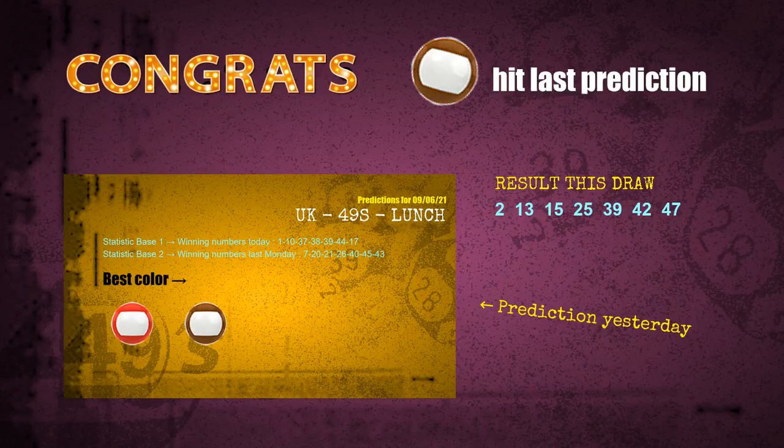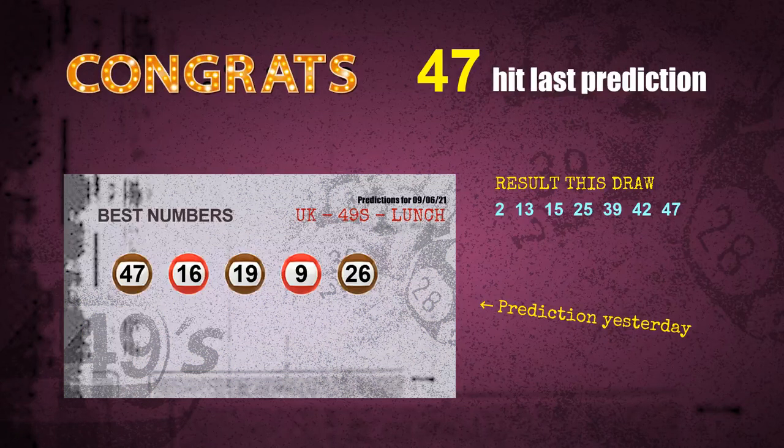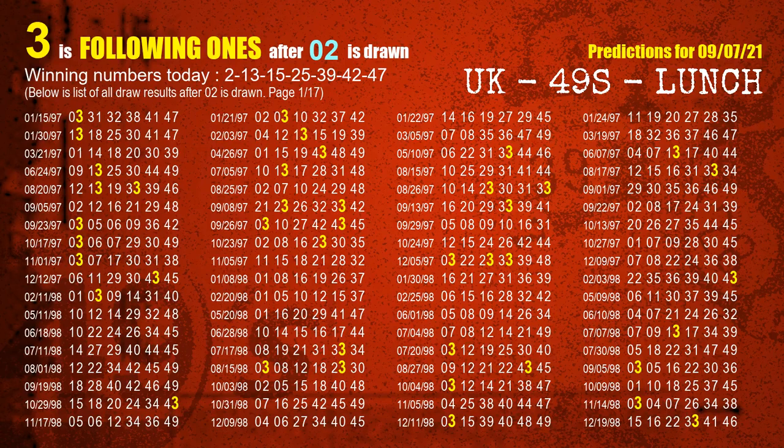Brown balls are hit, number 47 is hit. Congrats to all winners. We will tell you how to find out winning numbers of the next draw step by step. First, we'll find out the following ones through today's result. Following numbers refer to those numbers being picked on the next draw after this one, and following ones are the units digit of those following numbers.